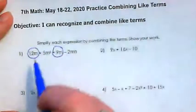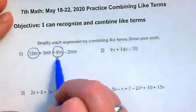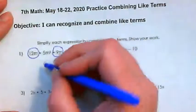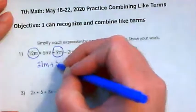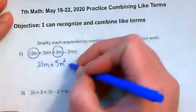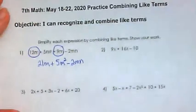So in this case we would just be taking 12m plus 9m and putting them together. And 12 plus 9 is 21 plus 5m squared minus 2mn. And it's as simple as that.